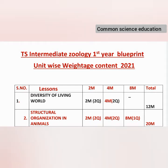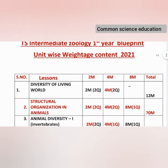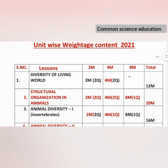So Unit 1 — Diversity of Living World: 2 marks, 2 questions; 4 marks, 2 questions. So total for Unit 1 is 12 marks.